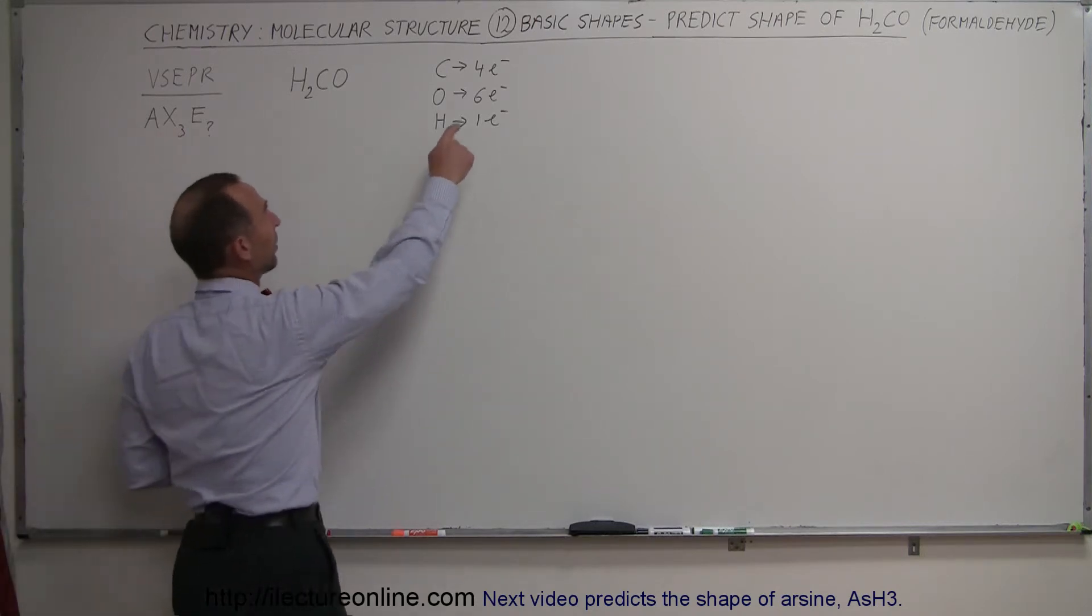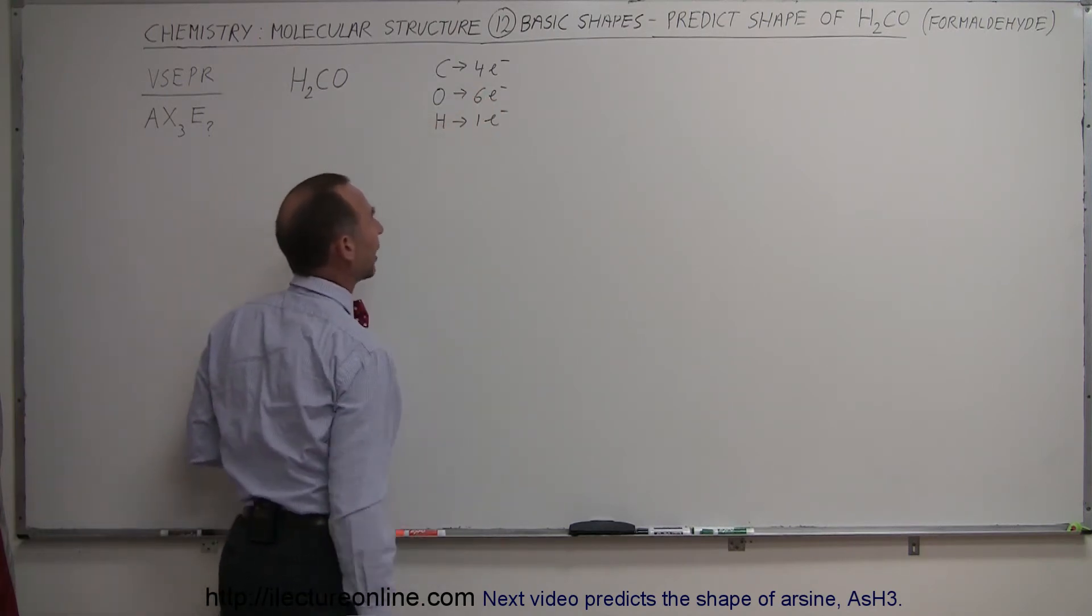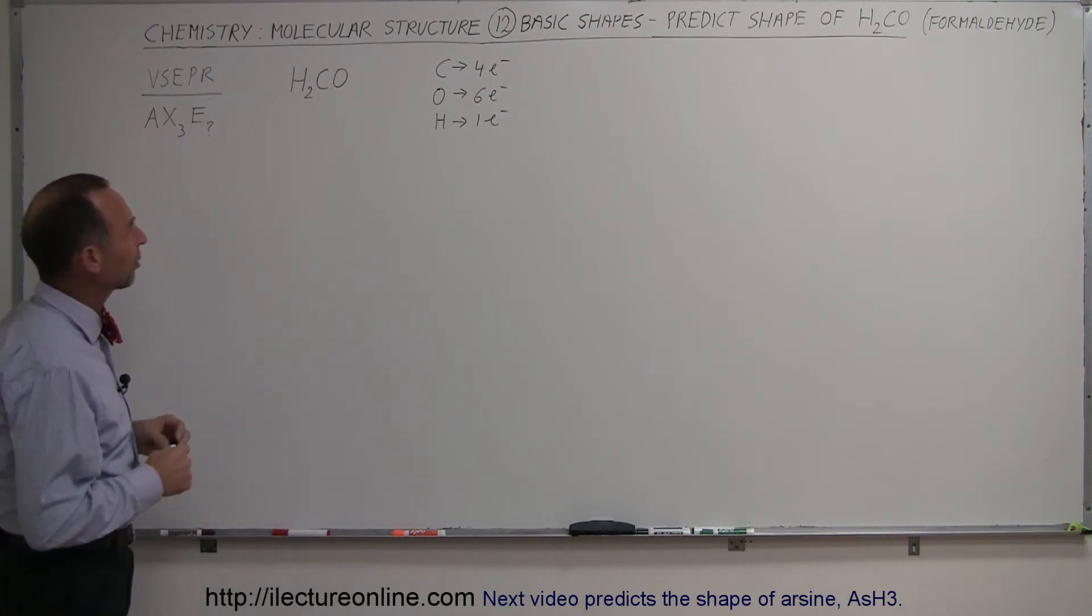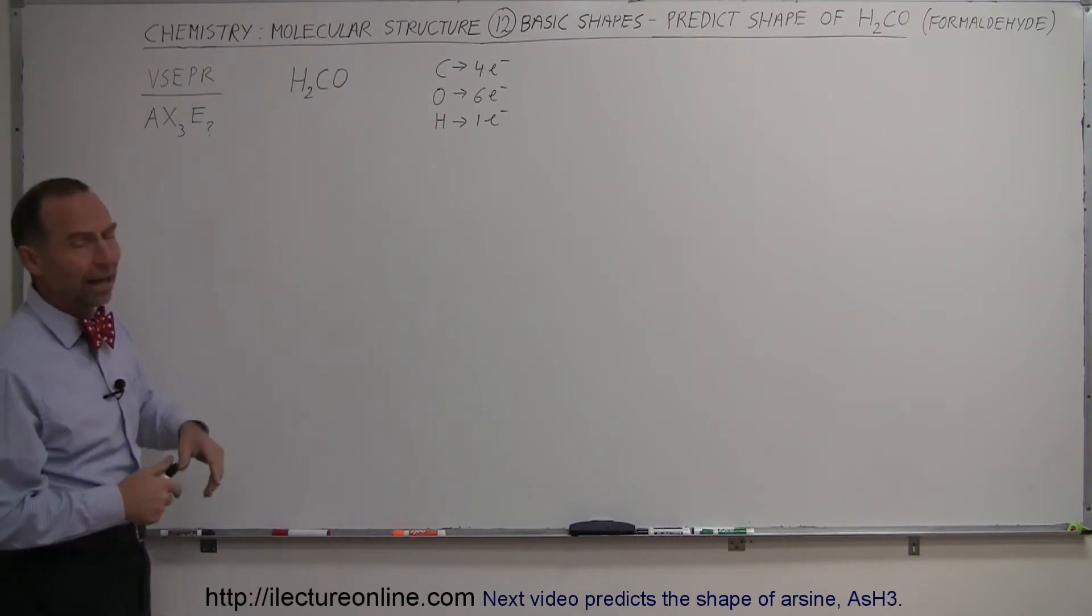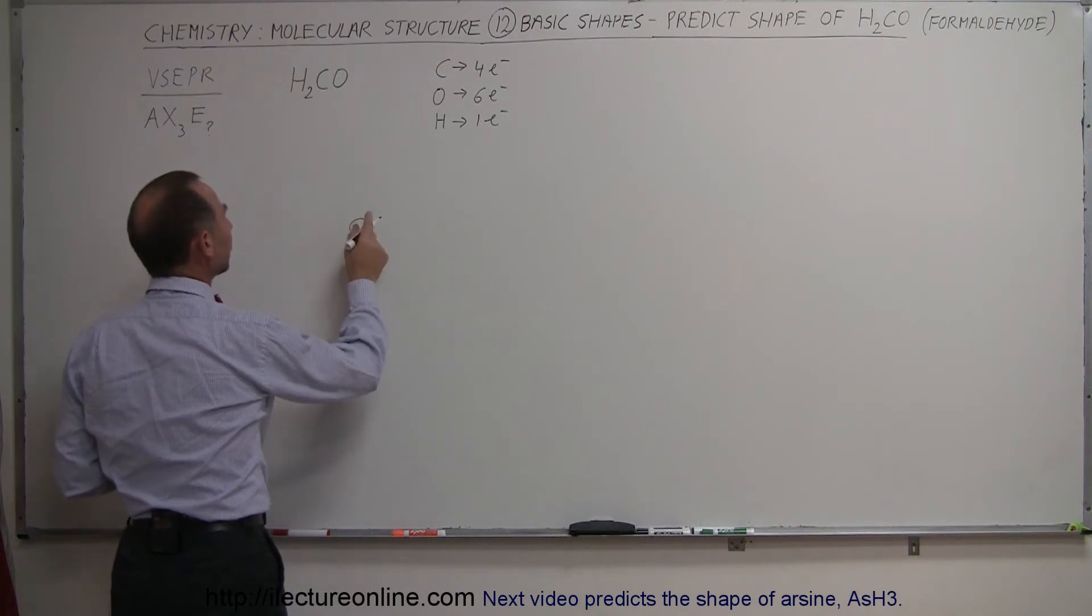Also, we know that carbon has four electrons in its valence shell. Oxygen has six, and hydrogen has one. Since carbon is the lowest electronegativity atom of the bunch, not including hydrogen, we'll put that in as the central atom, so we have carbon in the middle, two hydrogens, and an oxygen.